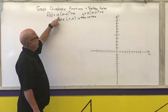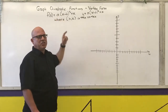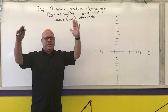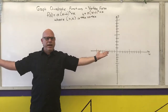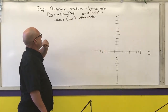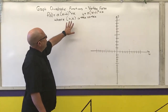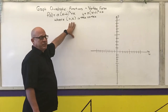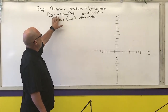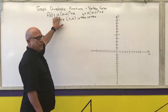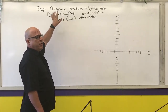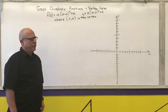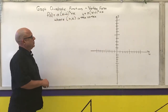Like our other forms, the a gives us our scaling factor — it tells us how steep or how wide the parabola is. Once I know where the vertex is, just like our previous forms, I'm going to go over 1 up a, over 2 up or down 4a. That's going to give us our other points to graph this.